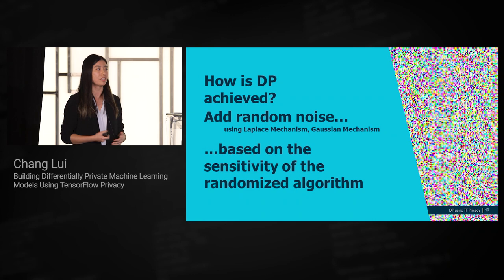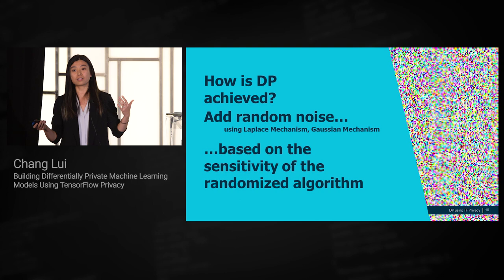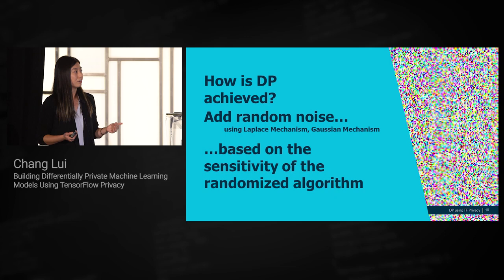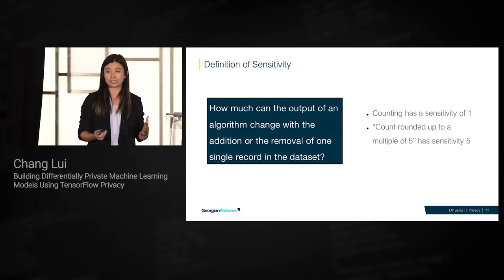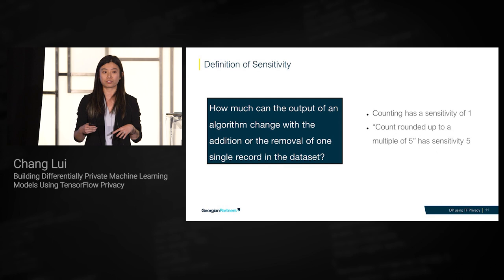So how is differential privacy achieved? Thinking back to the exercise, we add random noise. This can be done through different mechanisms such as the Laplacian mechanism or the Gaussian mechanism, and it must be done based on the sensitivity of the algorithm being applied. The sensitivity of any algorithm on a dataset is how much the output would change with the addition or removal of one single user or record from the dataset.